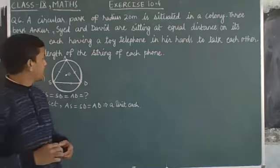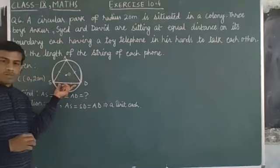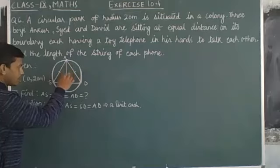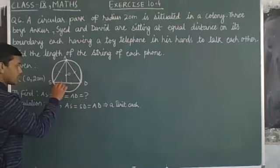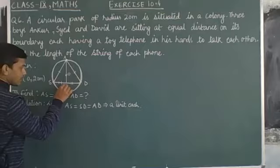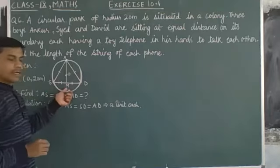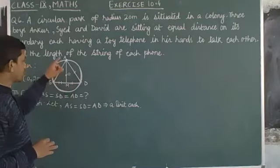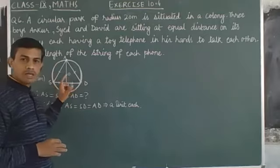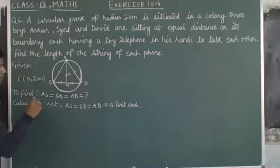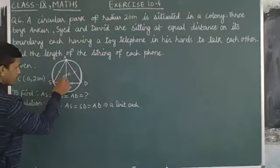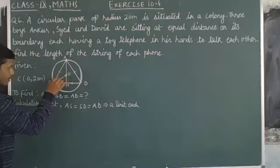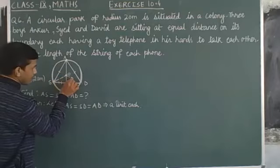Here we draw a perpendicular from A onto the opposite side SD. In case of an equilateral triangle, this perpendicular would bisect the opposite side at M. This is a perpendicular bisector of SD, so obviously it would be passing through the center of the circle as well. Now we join center O to S and D.